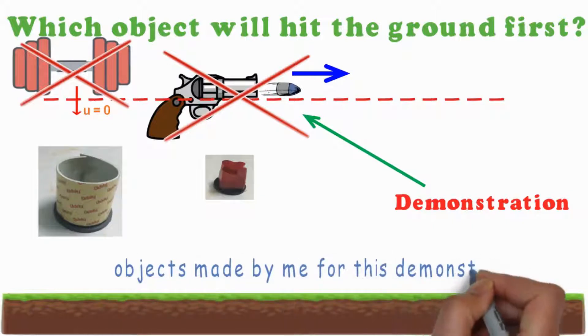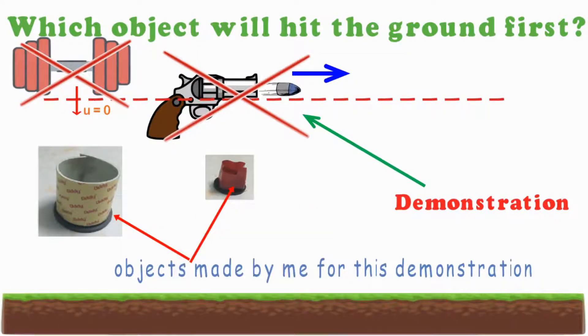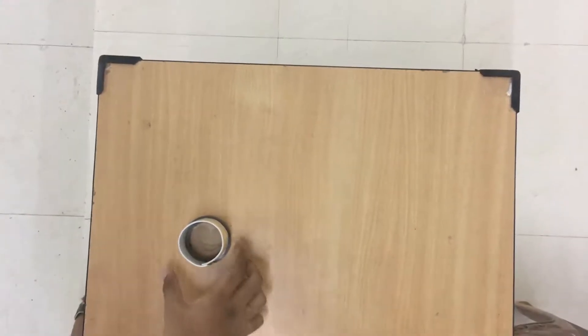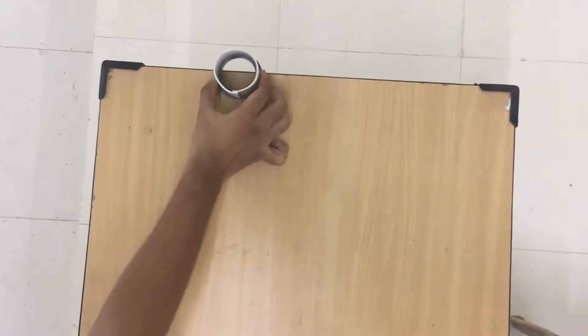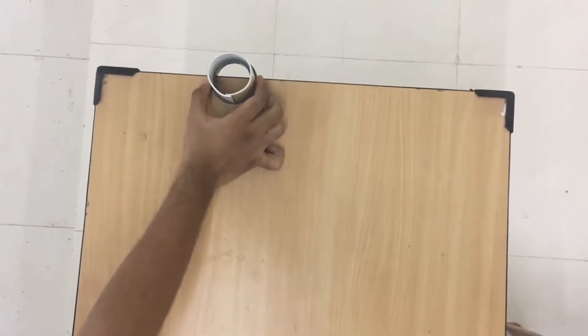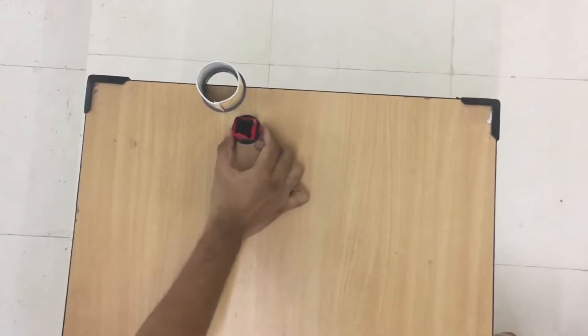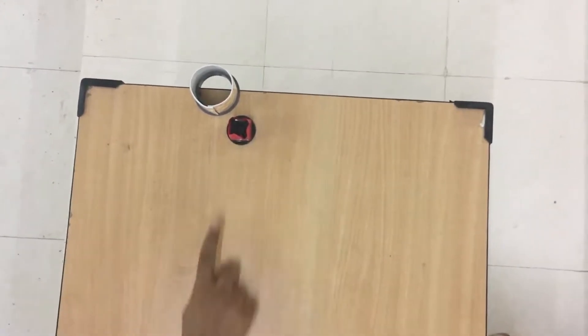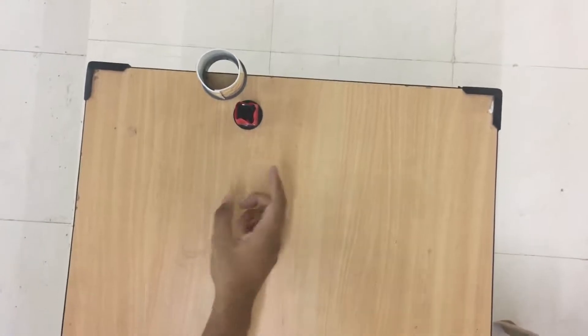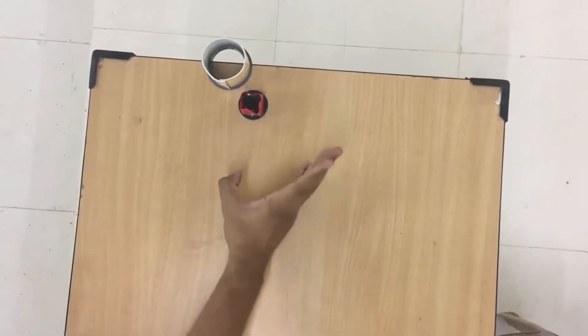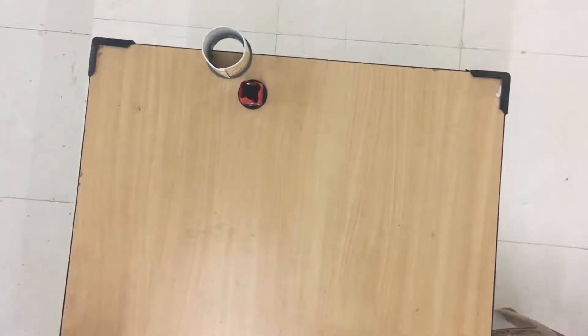I will try to project these two objects horizontally. For that, I will put the heavy object at the edge of the table and the second object just beside it. Now I will push this object, or flick it. This object will try to move forward. Due to collision, the large object will get a very small velocity.